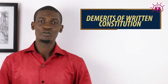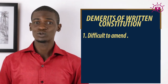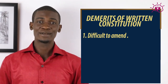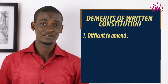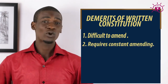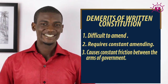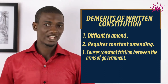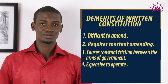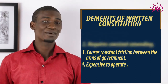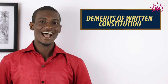Let's consider the demerits of a written constitution. One, its rigid nature doesn't allow easy amendment — whenever it is amended, it is usually cumbersome, that is tiresome and expensive. Two, it has to be amended all the time to meet future and present needs of a country. Three, it causes constant friction between the three arms of the government — they are always clashing with themselves. And four, it is very expensive to run. Countries that practice written constitution include the USA, Nigeria, and France.